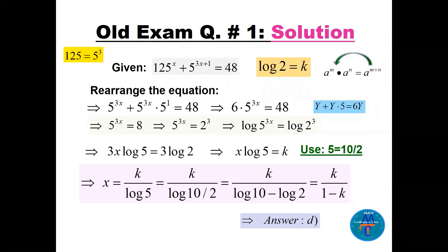For question one, we note that 125 is 5 cubed, so we write 5 to the power 3x plus 5 to the power 3x times 5 to the power 1. Using the laws of exponents in reverse, adding powers corresponds to multiplying with the same base. We then have a quantity 5^(3x) plus 5 times that same quantity, which is like y plus 5y, giving 6y.